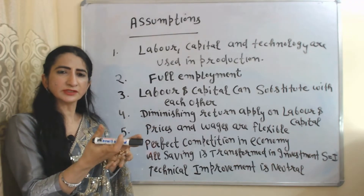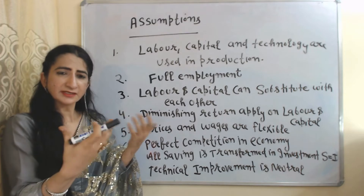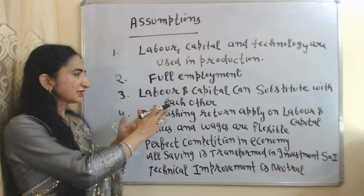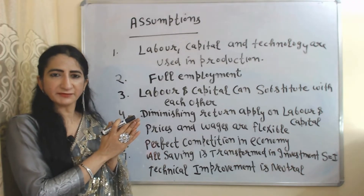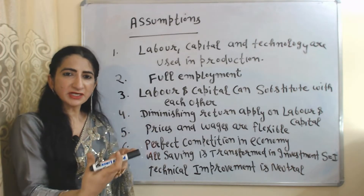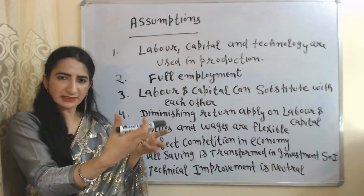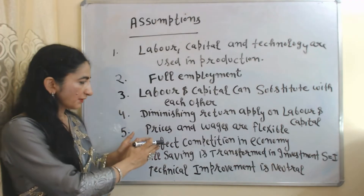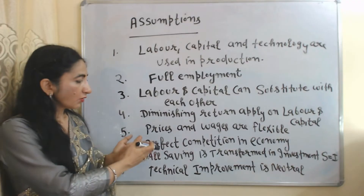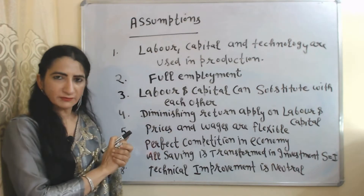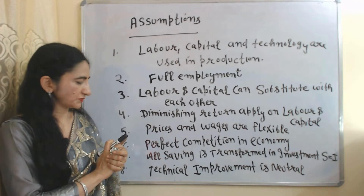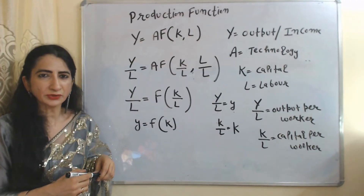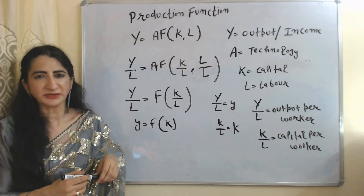Labor and capital can substitute with each other — we can use capital in place of labor, and similarly we can use labor in place of capital. Diminishing returns apply on labor and capital, meaning after a certain time period additional units of labor and capital give us less output. Prices and wages are flexible, perfect competition exists in the economy, all saving is transformed into investment, and technical improvement is neutral.